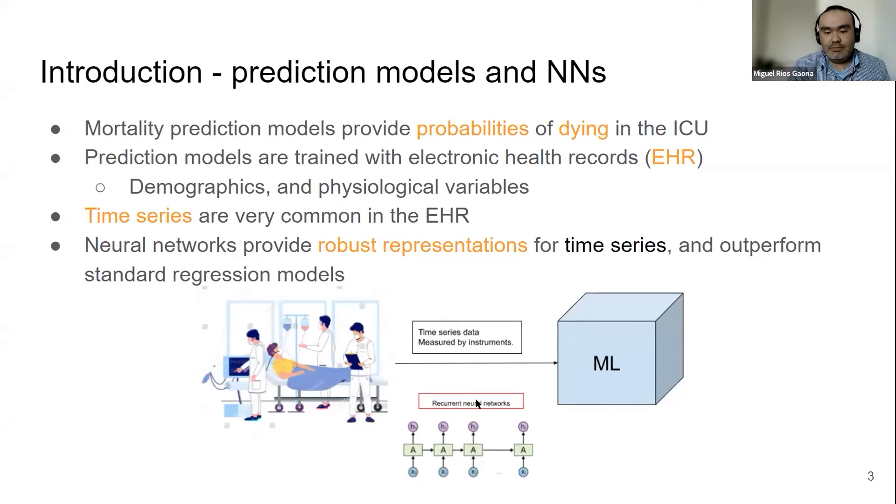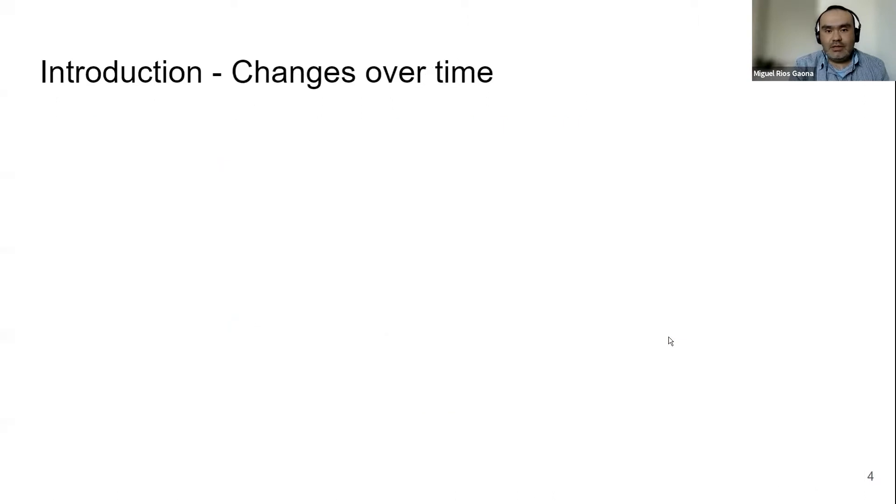Neural networks provide a robust representation for time series and sometimes outperform standard regression models. As we can see here, recurrent neural networks have become prevalent to model time series data, resulting in non-linear classification models.